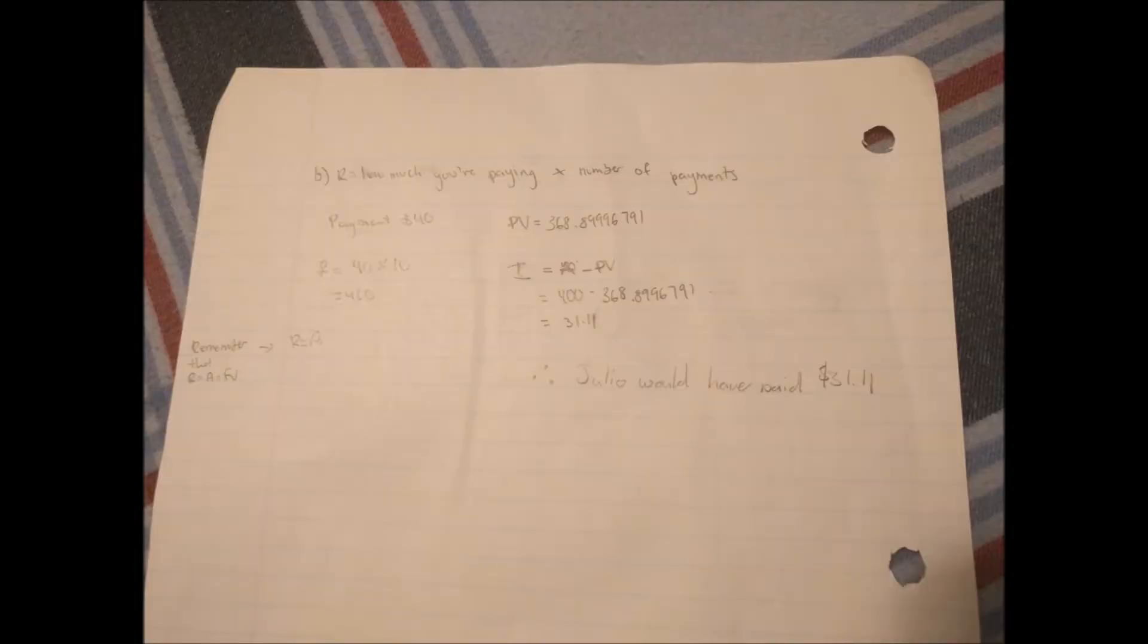In this question, we use the equation I equals A minus PV or I equals R minus PV. Reminder that R is equal to A which is equal to future value. Our R value is how much you are paying times the number of payments. The payment is $40. $40 times 10 equals 400. Our present value is 368.8996791. Therefore, plugging in the numbers we get 400 minus 368.8996791 giving us a total of 31.11. Therefore, Julio would have paid $31.11.